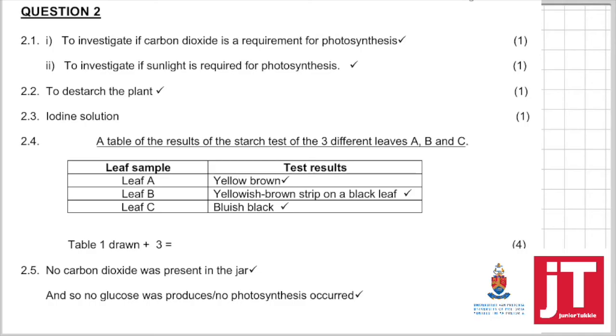You must have a table drawn with your column headings here: leaf sample A, B, C, test results, and you must have a heading, a table of the results of the starch test of the three different leaves A, B, and C. Now, leaf A, we know there'll be no carbon dioxide, so the leaf will be yellowish-brown. There'll be no positive test for starch.